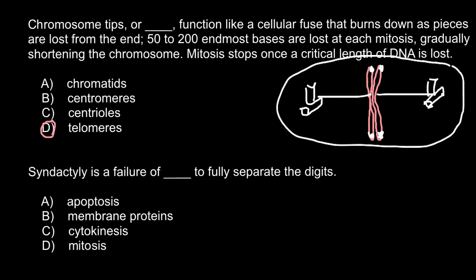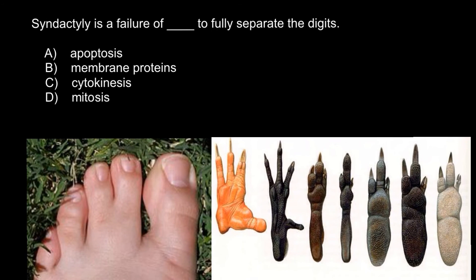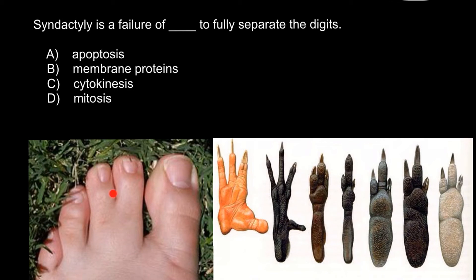The next question: syndactyly is a failure of blank space to fully separate the digits. This picture demonstrates what syndactyly is — a failure to fully separate two fingers. Syndactyly can be simple, as in the picture, where about half the space toward the fingertips is separated and half is not, with only soft tissues failing to separate. This can be easily corrected with surgery.